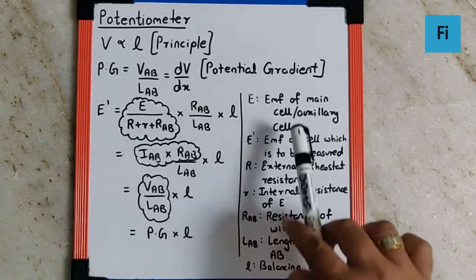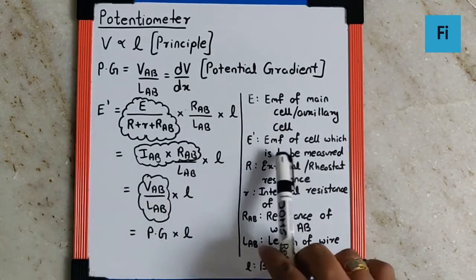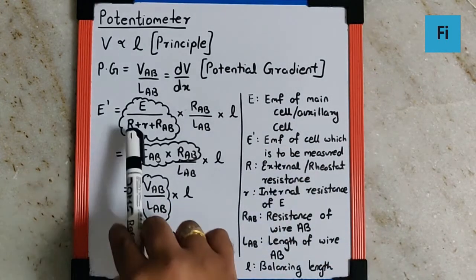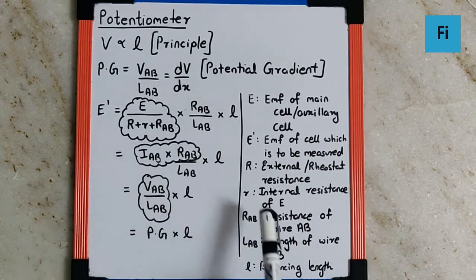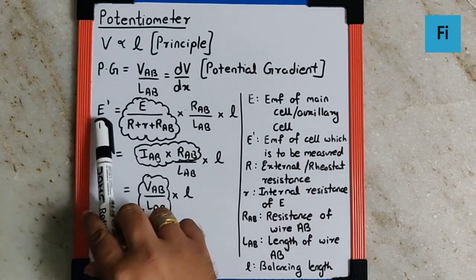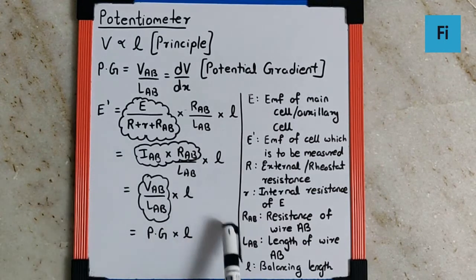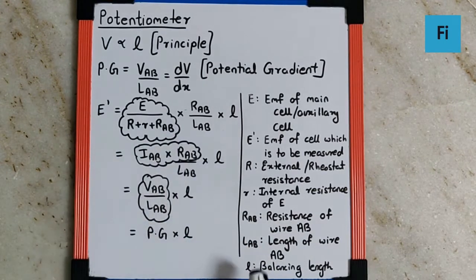Where the individual terms are known as: E is the EMF of the main cell or auxiliary cell, E' is the EMF of cell which is to be measured, R is the external or rheostat resistance, small r is the internal resistance of E the main cell and not E', please remember that. RAB is the resistance of wire AB.